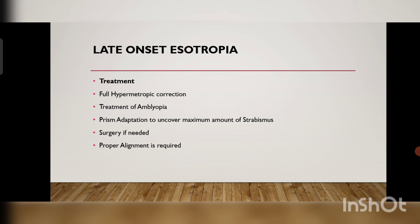Prism adaptation is used to uncover the maximum amount of strabismus. You can give base-out prisms along with the hypermetropic spectacles. Surgery is done only if needed, and we have to properly align the eyes. So the goals are to fight the amblyopia and develop the binocular function — these are the treatment goals in case of late-onset esotropia.